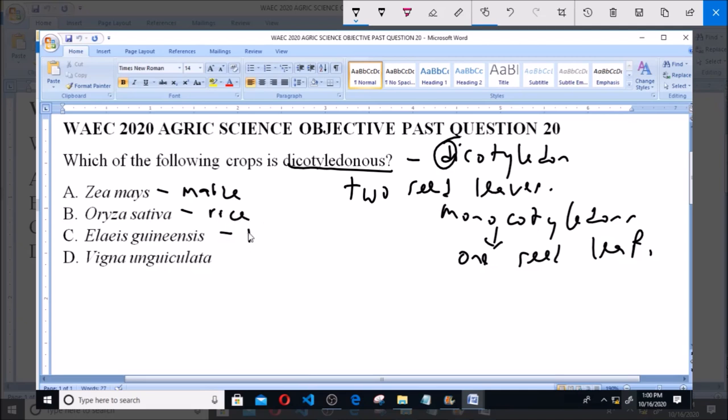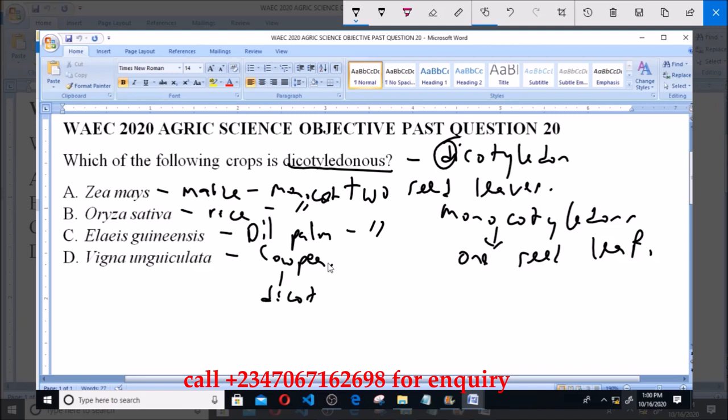C is oil palm, and then D is cowpea. Now maize is a monocot, that means it has one seed leaf. Rice as well. Oil palm is also a monocot, but cowpea is a dicotyledonous. Now cowpea is a legume.